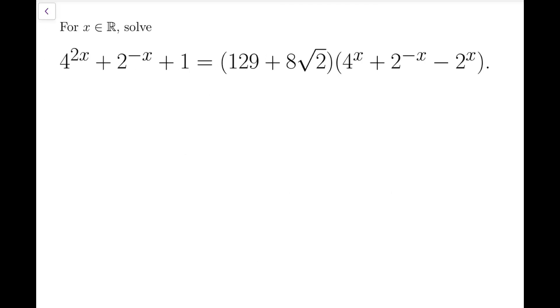As you can see, there are lots of powers of 2 in this equation, so I might just let u equals 2 to the x. This term will become 2 to the 4x, and that means u to the 4. This will be 1 over u, and then for 4 to the x, it is actually u squared. 2 to the minus x is 1 over u again, and this is u.